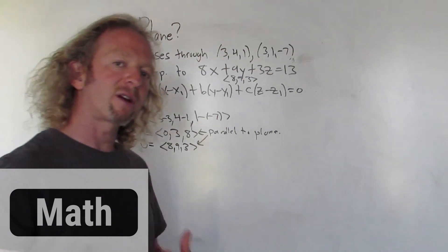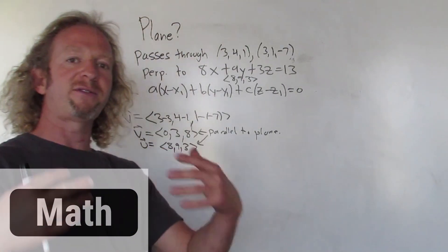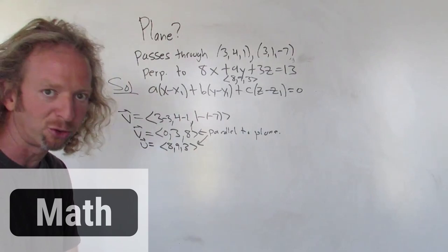We have two vectors that are parallel to our plane so we can find the cross product to find a vector that is normal to our plane.